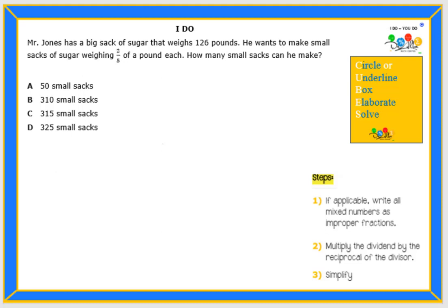Hello there students. Today we will be working on this problem. Please read along with me. Mr. Jones has a big sack of sugar that weighs 126 pounds. He wants to make small sacks of sugar weighing two-fifths of a pound each. How many small sacks can he make?